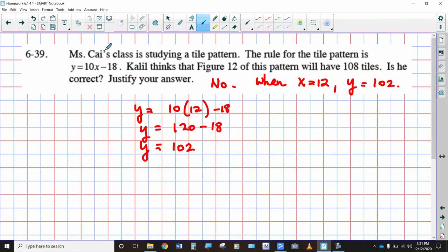Mrs. Kai's class is studying a tile pattern. The rule for the tile pattern is Y equals 10X minus 18. Khalil thinks that figure 12 of the pattern has 108 tiles. Is he correct? Well, I guess no. The answer is no, because if you plug in 12 here, you get 120 minus 18 is 102. It is not 108. 102 would be the number of tiles in the 12th figure.